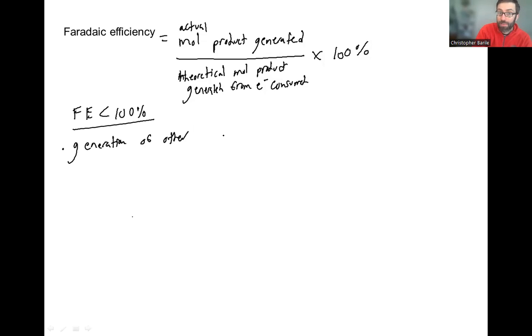So your total Faraday efficiency should equal 100%. If it doesn't, that's a good way to check that things are working right. Measure all your individual Faraday efficiencies, measure your products using whatever analytical techniques you need to get them, and then add them all together, and you should get something close to 100%. If not, something else is going wrong.